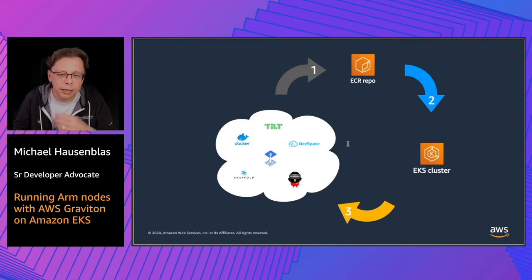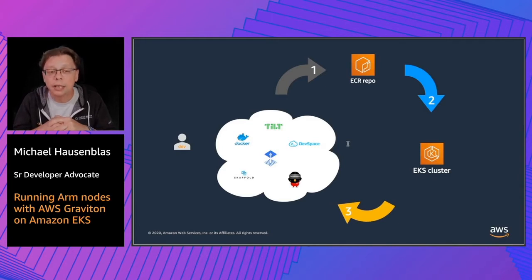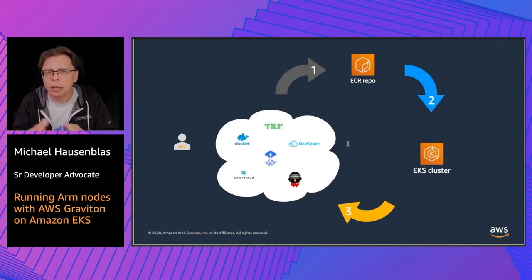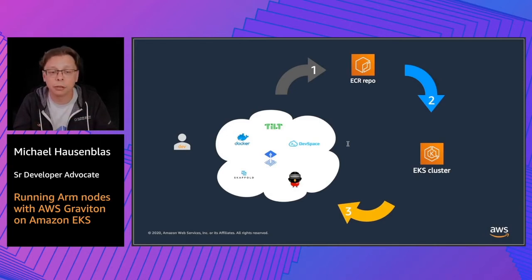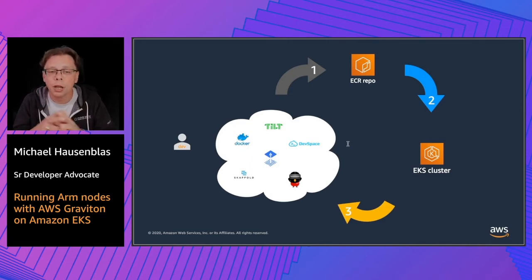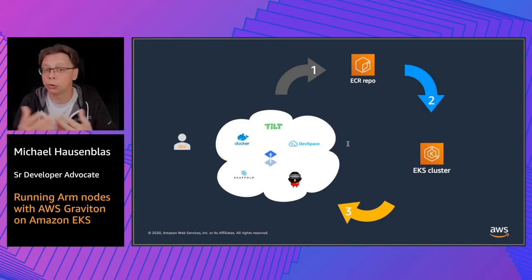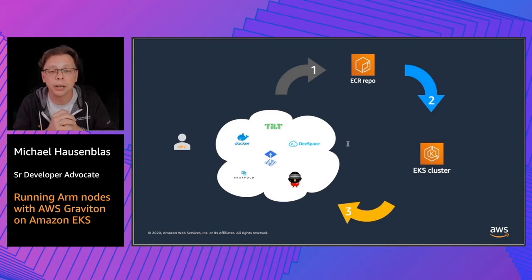If you think about the entire lifecycle, starting out as a developer creating containerized microservices on your laptop, using a range of tools — Docker Desktop, Tilt, DevSpace, Flux, Scaffold, Telepresence — a number of things to develop particular microservices. What you then do is build a container image, for example with Docker build, and push that into a registry. In our case, we use ECR and have an ECR repository.